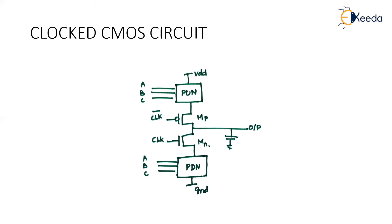As in static CMOS, the same number of inputs will be there in your pull-up network and pull-down network. I have mentioned three inputs A, B, C, and those three are given to my pull-down network as well. But the modification in clocked CMOS is that two clocked transistors are in between — one is controlled with the clock signal and one more, MP, is controlled by clock bar, the negation of your clock. The output is taken at the common point of both MP and MN.